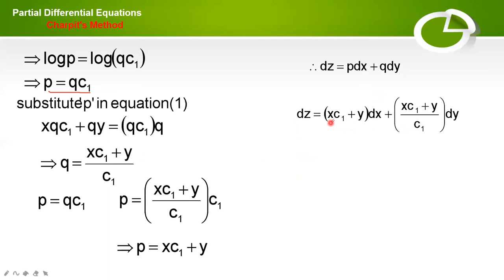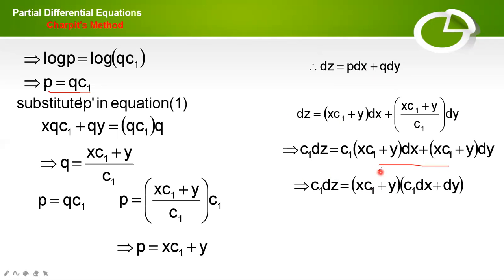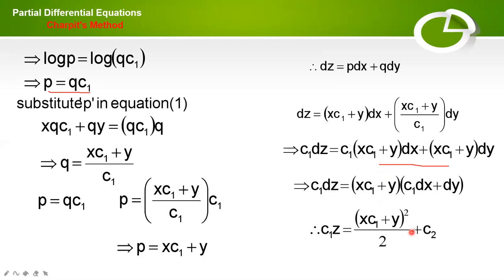Multiply through by c1: c1 dz equal to c1 into xc1 plus y times dx plus xc1 plus y times dy. Rearranging, c1 dz equal to xc1 plus y times the quantity c1 dx plus dy. Therefore, integrating, c1 z equal to xc1 plus y whole squared divided by 2 plus c2. In this way, you can find the solution.